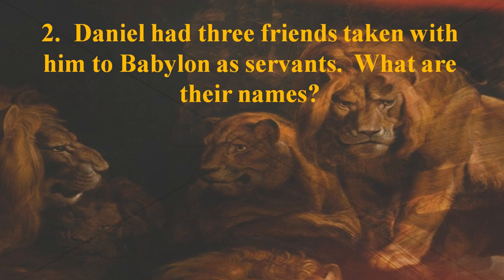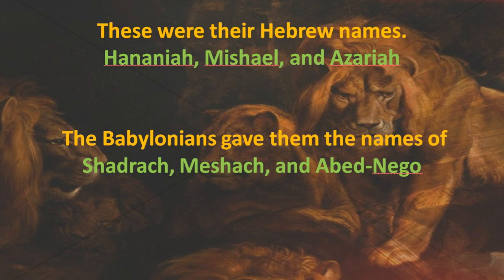Number two: Daniel had three friends taken with him to Babylon as servants. What are their names? I would accept either set of names. Their Hebrew names were Hananiah, Mishael, and Azariah. Nebuchadnezzar gave them their Babylonian names: Shadrach, Meshach, and Abednego — those are the ones you remember.